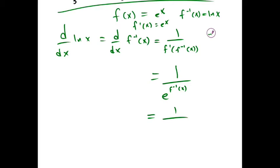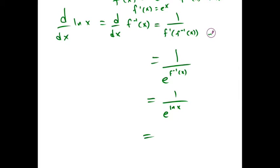But we know f inverse is ln x. So e^(ln x) is just x because they're inverses of each other. So the derivative of ln x is 1 over x.